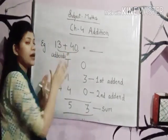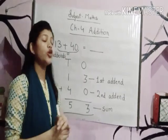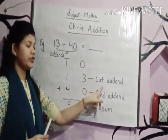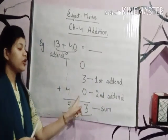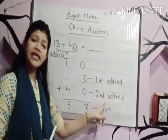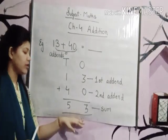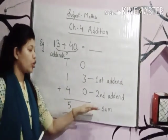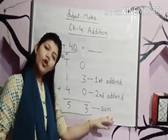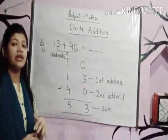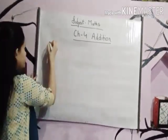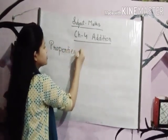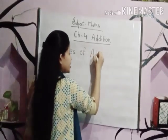Keep these key points in your mind. The numbers which we are adding are called addends. The first numeral is known as the 1st addend and the second numeral is known as the 2nd addend. And the answer which we get after adding these addends is called the sum. I hope this much is clear to you all.